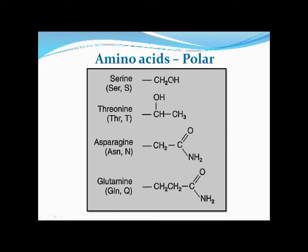Polar amino acids are those whose R side chain is polar. For example, serine (3-letter code Ser, 1-letter code S) has the side chain CH₂OH — the hydroxyl group makes it polar. Similarly, threonine (Thr, T) also has an OH group on its side chain. Asparagine (Asn, N) has a carbonyl and NH₂ group — that is, a full amide group. Glutamine also has an amide group, but differs from asparagine by one extra methyl group in the chain.